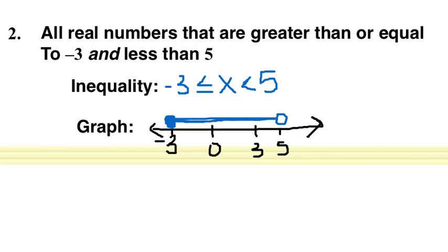Since x is greater than or equal to negative 3 and less than 5, we can combine that into the inequality: negative 3 is less than or equal to x, which is less than 5. Graphing that, we have a closed circle at negative 3 going to the right, and an open circle at 5. Those connect in the middle where they overlap — that's your graph.